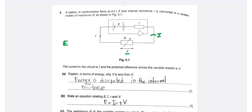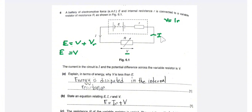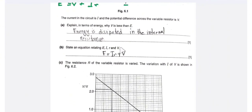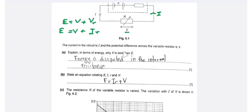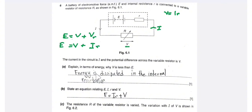Explain in terms of energy why V is less than E. We know that EMF E is divided into V, the potential difference across the resistor, plus the voltage across the internal resistance. The voltage across the internal resistance is equal to current I multiplied by the internal resistance r. So energy is dissipated in the internal resistance.